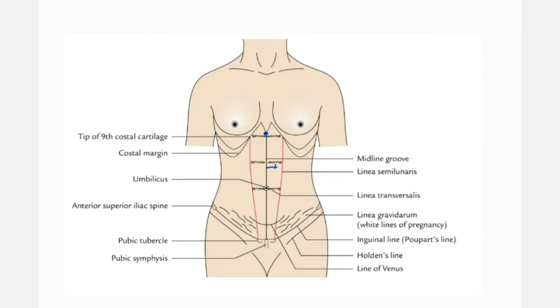...you will find another vertical groove on the right side and left side. These grooves are known as the linea semilunaris, extending from the tip of the ninth costal cartilage till the pubic tubercle. Join these two lines and you will find the linea semilunaris.